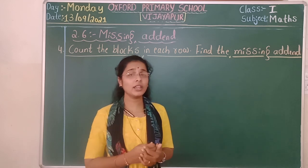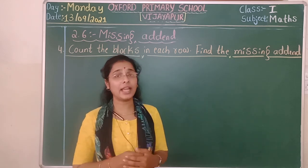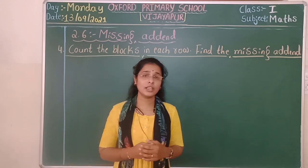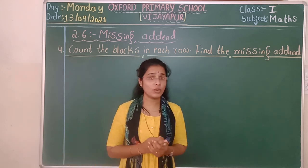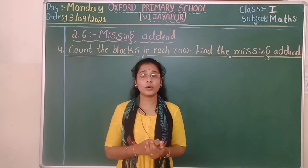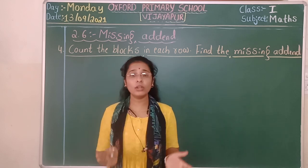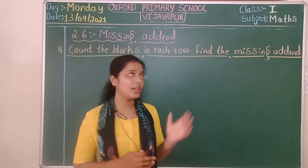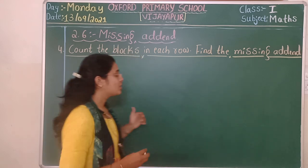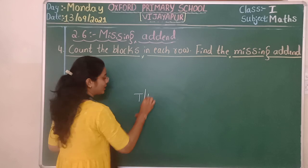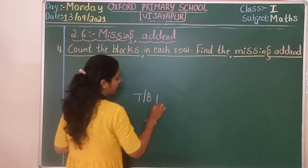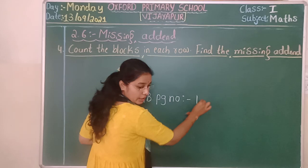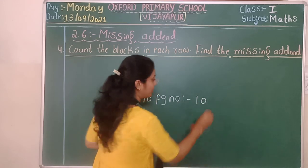This is present in the textbook, page number 107. Before we start, yesterday we did missing addends. The homework I gave was to rewrite question number 3 in the notebook. Many of you have not submitted your proper homework — see the whole video and then sign. In today's class, we will learn this. Open the textbook to page number 107.